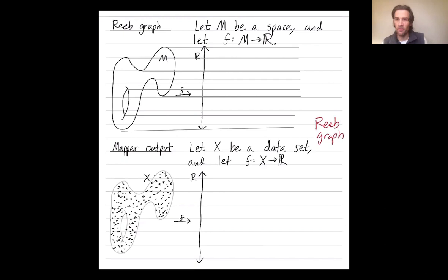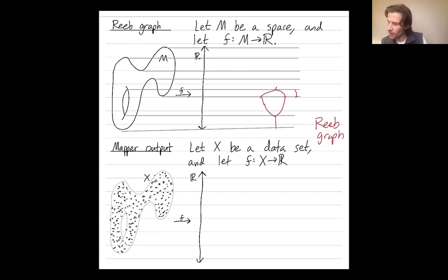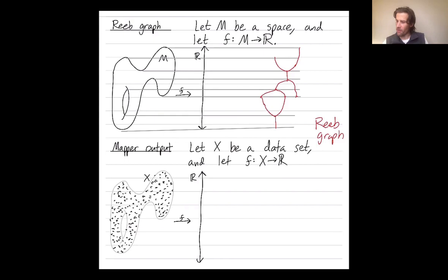Then from three back down to two, and then from two back down to one connected component. At this point I have a splitting, going back to two connected components; one ends, leaving one connected component; and then that last connected component disappears. So the Reeb graph, which I'll draw in red, starts with one connected component that splits into two, a third is born, these two merge, I have a single component that splits again, the left one ends, and the right one continues until it ends as well.